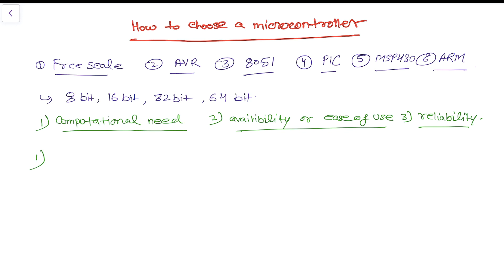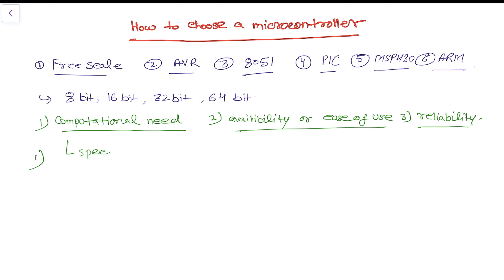Choosing a microcontroller is really very difficult — it must be efficient and cost-effective. When analyzing your need, you must first determine whether you need an 8-bit, 16-bit, 32-bit, or 64-bit device, and what computational power it can handle, such as the maximum operating speed it supports. You also need to consider the packaging size and type, such as DIP, QFP, or QFN.